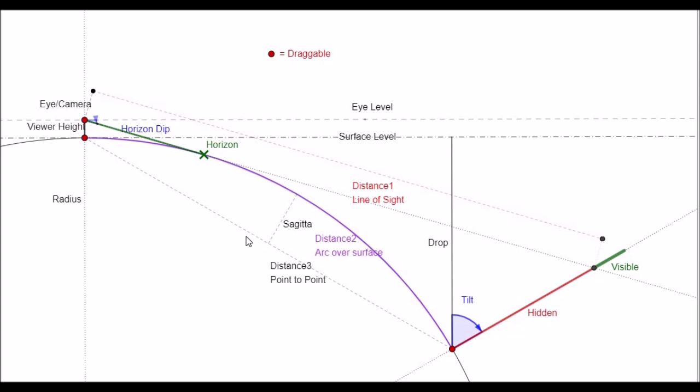Why does lowering the camera height and moving the viewer further away cause a significant, a major increase in the amount of the object that is hidden from view if the Earth is flat?